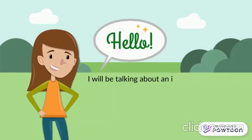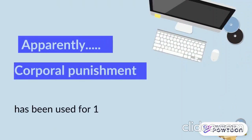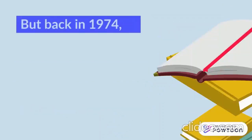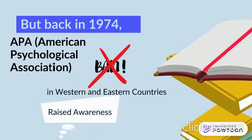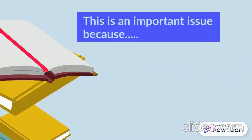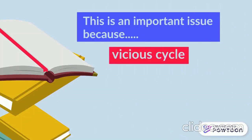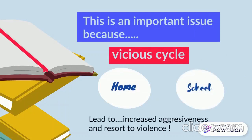The next issue in education is corporal punishment. Corporal punishment has been used for over 1,000 years, back in the days of wars. But back in 1974, the APA, American Psychological Association, banned corporal punishment in western and eastern countries to raise awareness and put a stop to corporal punishment in schools. This is an important issue because corporal punishment in schools is a vicious cycle — similar punishment occurring at home and school leads to increased aggressiveness and resort to violence, as children copy what their parents or authority figures do.